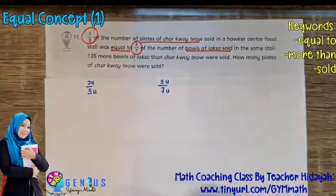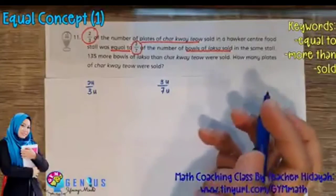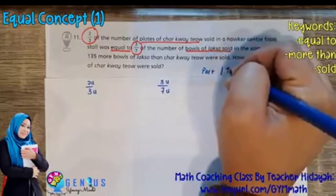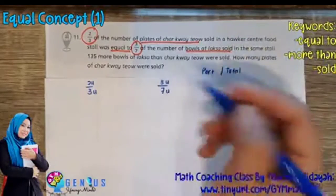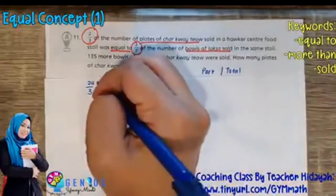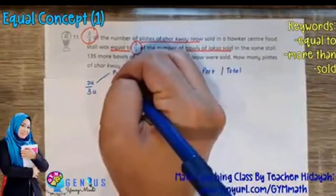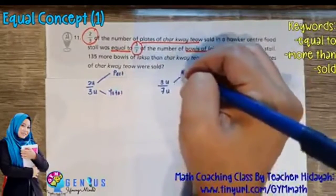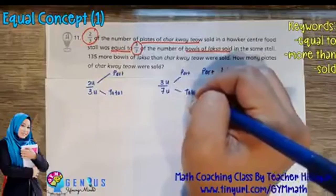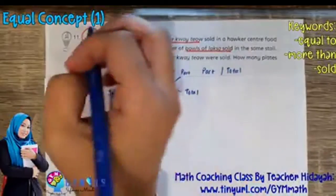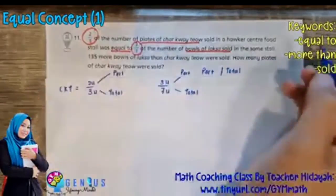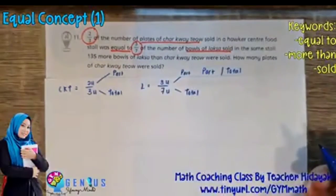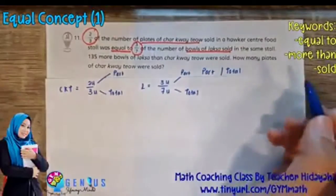So for equal concept, you must be able to identify the part and the total. You need to know where is the part and where is the total in the units of the fractions. So the top, the numerator is always the part. The denominator is the total. Here is my part and here is my total. So this 2/3 is referring to the Cha Kuei Tiao. And then the 3/7 is referring to the Laksa. I just use short form there. So now we have all this information.